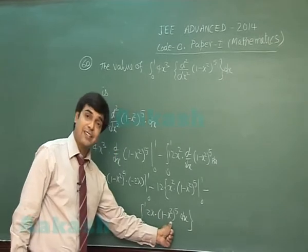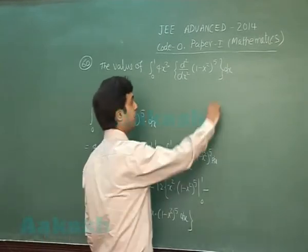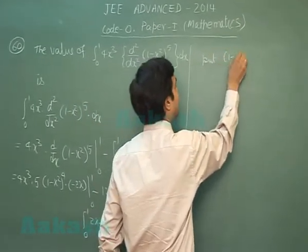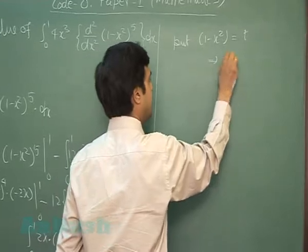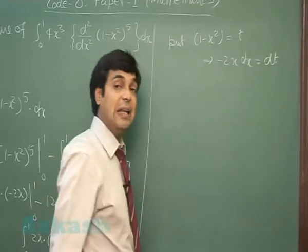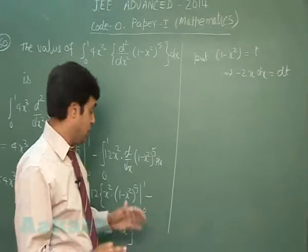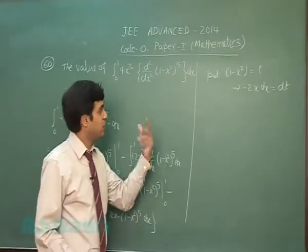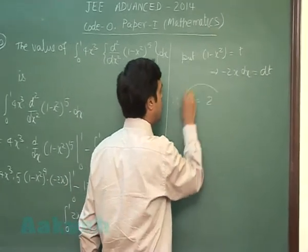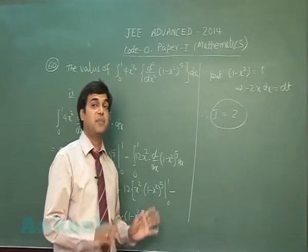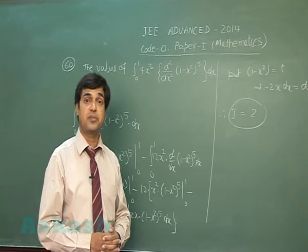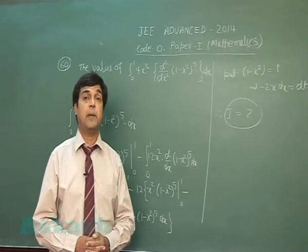We substitute t = 1 - x², so -2x dx = dt, and integrate to solve. On simplifying, we obtain the integral equals 2. This is question number 60, the last question of Paper 1 of JEE Advanced 2014.